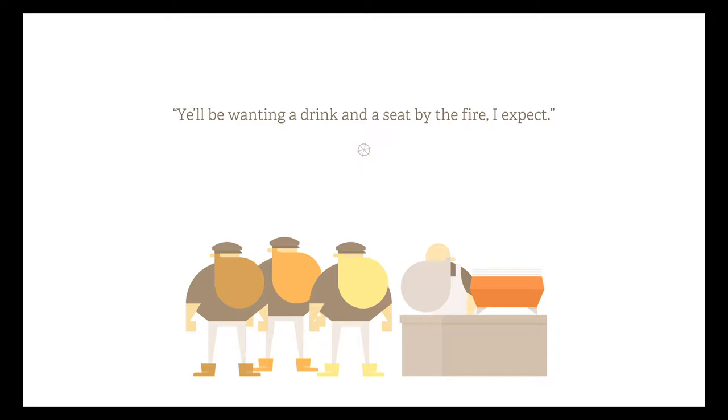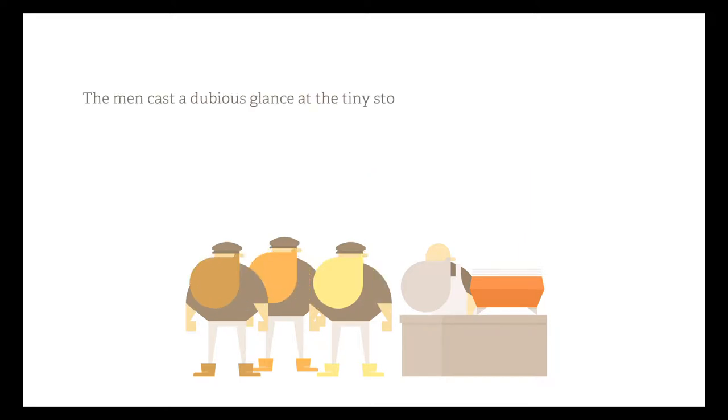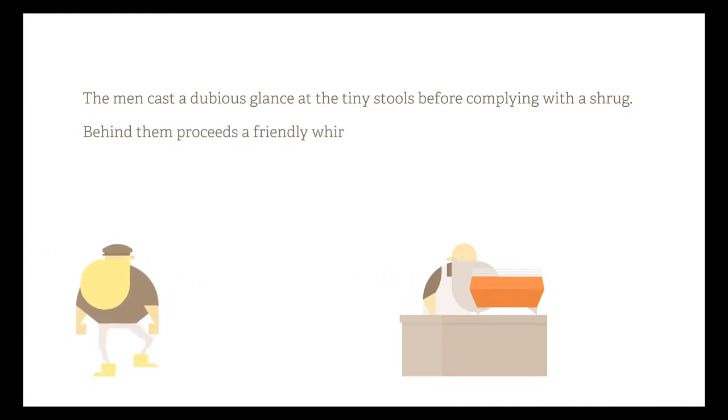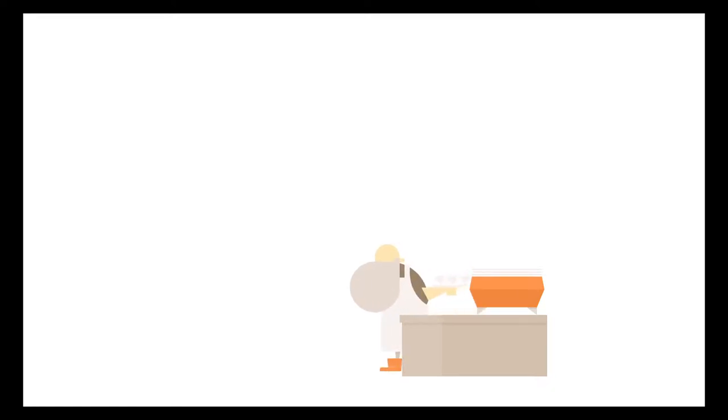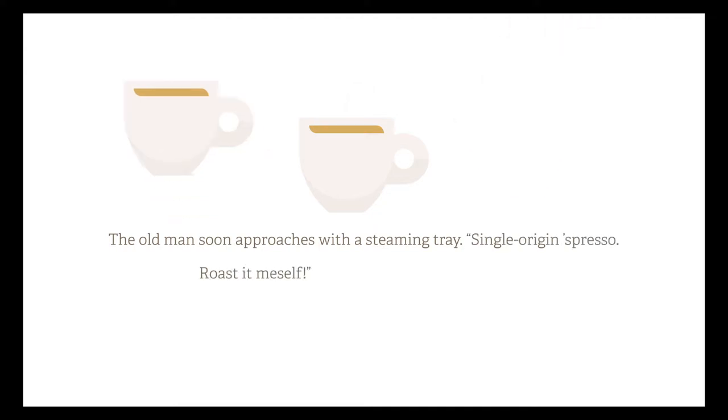You'll be wanting a drink and a seat by the fire, I expect. The men cast a dubious glance at the tiny stools before complying with the shrug behind them. Proceeds a friendly whir of mechanical sounds. The old man soon approaches with a steaming tray of single-origin espresso. Roast it myself, he declares. They stare blankly. He sighs. Coffee. Relaxing, the men sip cautiously. Eyes widen.